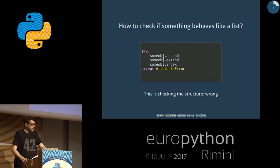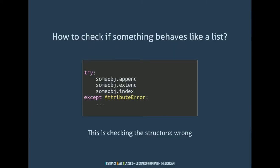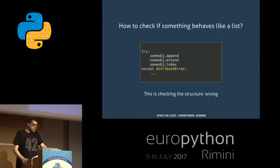More than that, if I have to check a complex behavior — for example, my object behaves like a list because I have a complex algorithm in which I have to slice, append things, and more — I have to check three or more methods. This is ugly, unmaintainable, and wrong because I am checking the structure. In Python there are ways to provide methods without actually putting them in classes, so this is not a good solution.